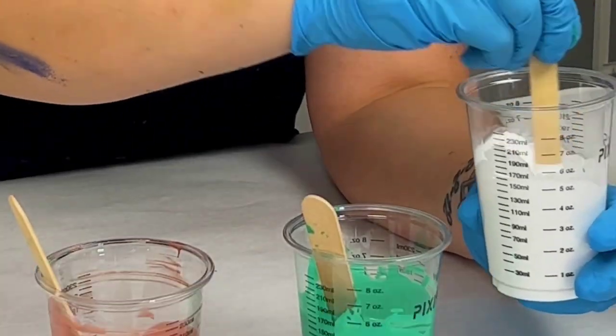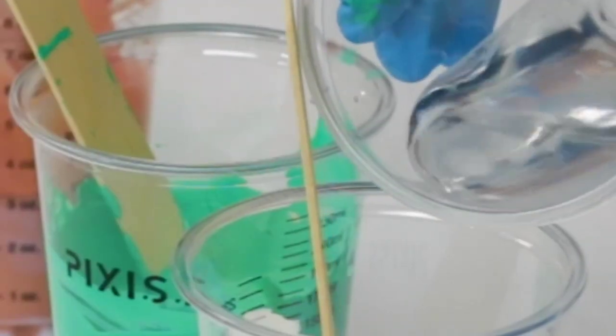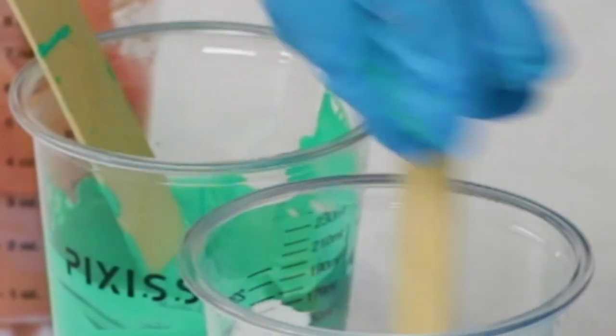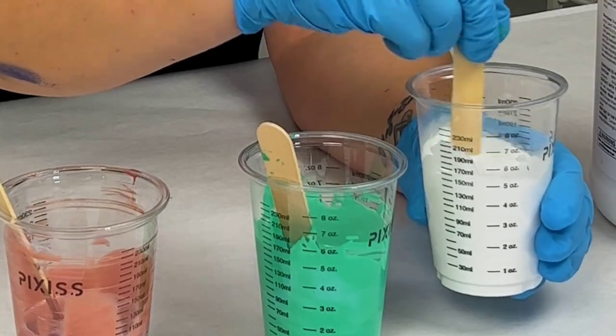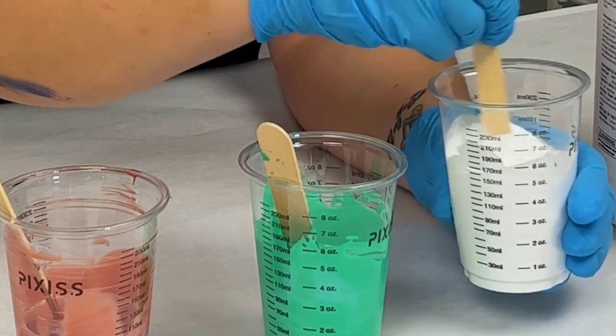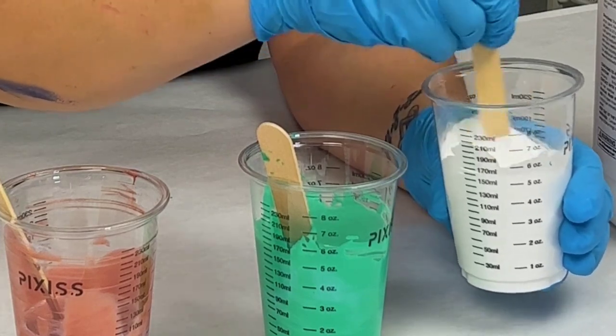We're going for the consistency of what people say is warm honey. You can think like heavy whipping cream. So it'll be thicker than water, definitely, but not too thick that it's hard to pour. You don't want a yogurt consistency generally.